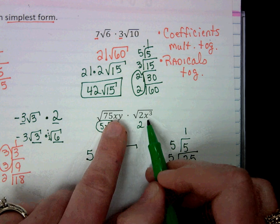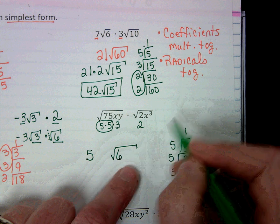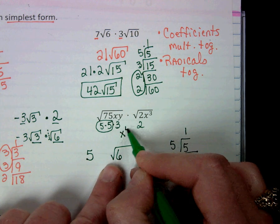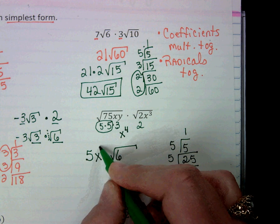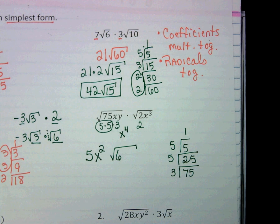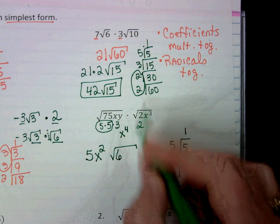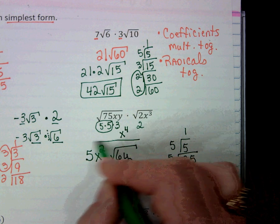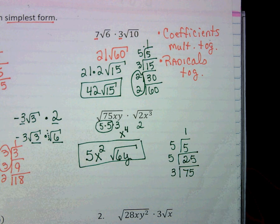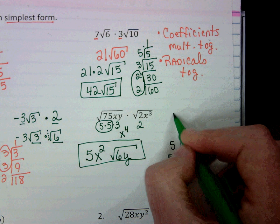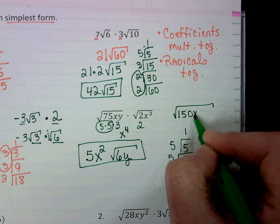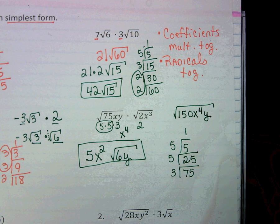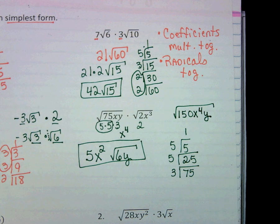My x's, if I put them together, I have x to the 4th, which means I have two pairs of x's, so x squared. And then my y doesn't have a partner. Now if you wanted to, you could put it all together first, 150x⁴y, and then simplify it from there.